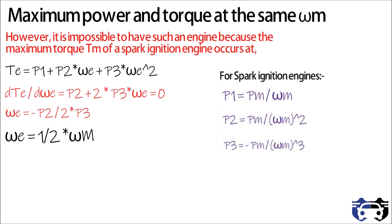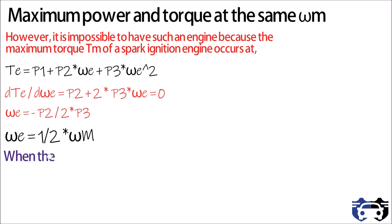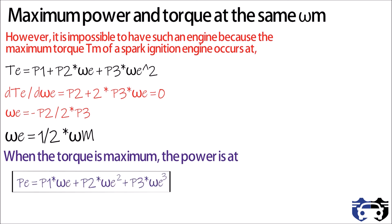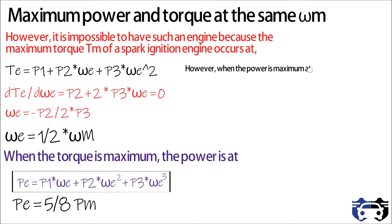Substituting the values of p2 and p3, we get omega e equals one half of omega m. So maximum torque occurs at half the angular velocity at which maximum power occurs. The power at this omega e, calculated by substituting into the third order polynomial, is p equals 5/8 times pm. This confirms it is not possible to achieve maximum power and maximum torque at the same omega e.